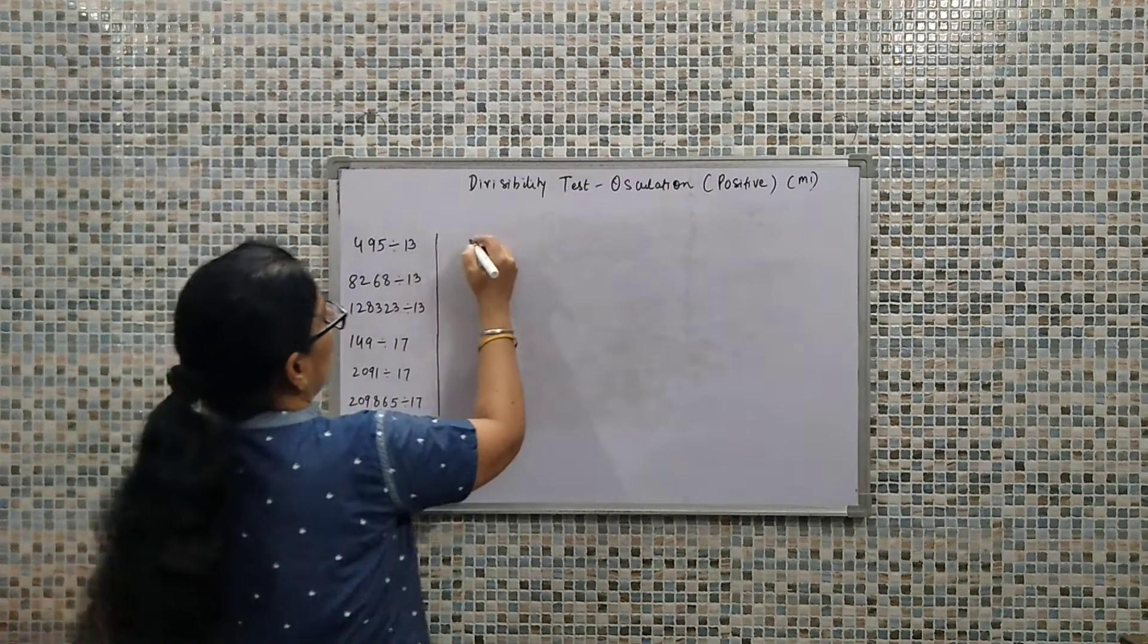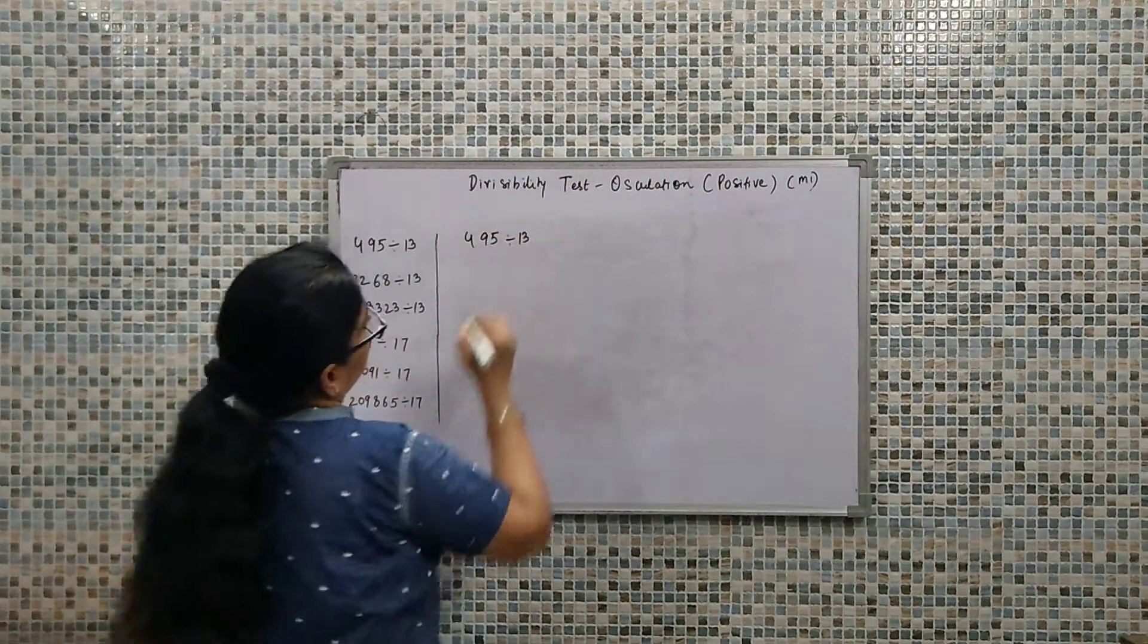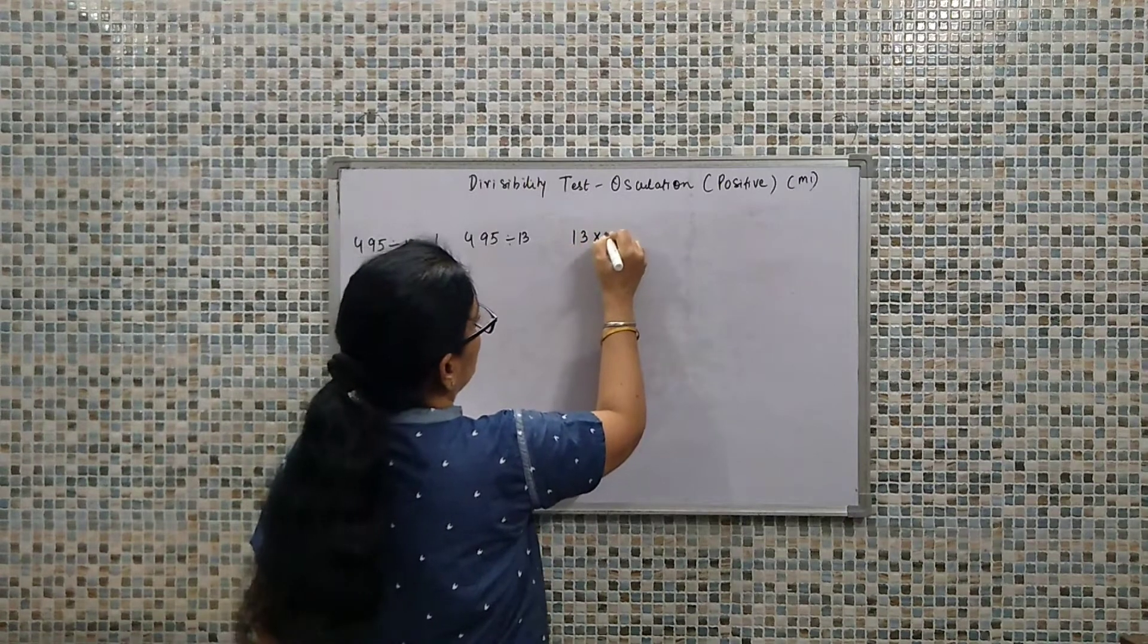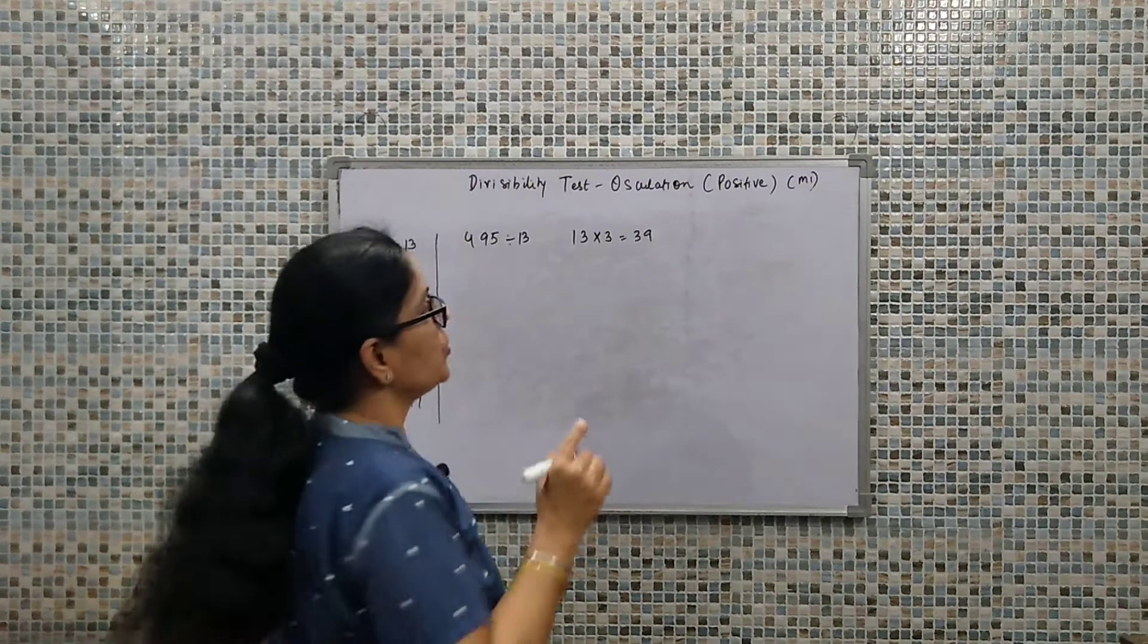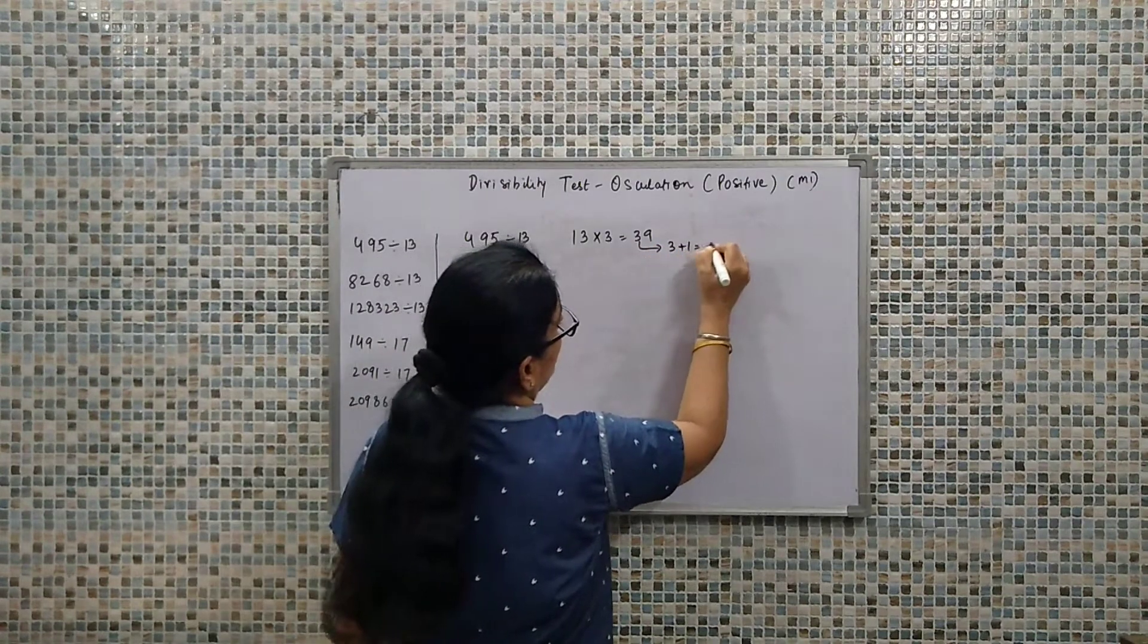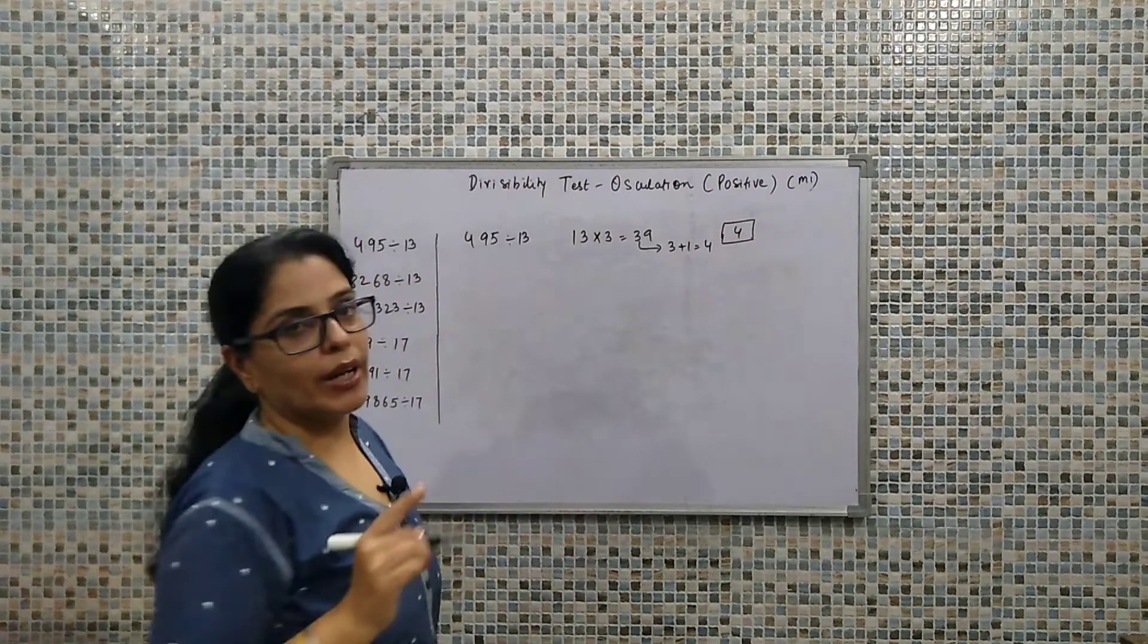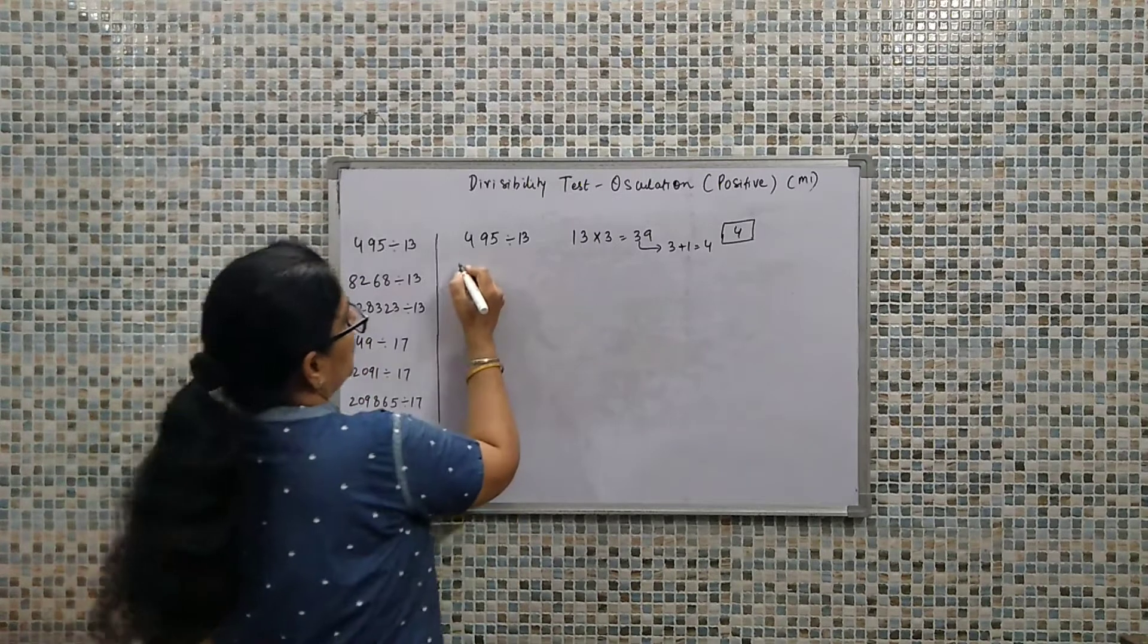Our first value is 495 divided by 13. For 13 divisibility, we have to multiply by 3. 13×3 is 39. Using Ekadhi (one more than), that will be 3+1, which equals 4. This means when we do divisibility with 13, our positive osculation value for calculation is going to be 4.